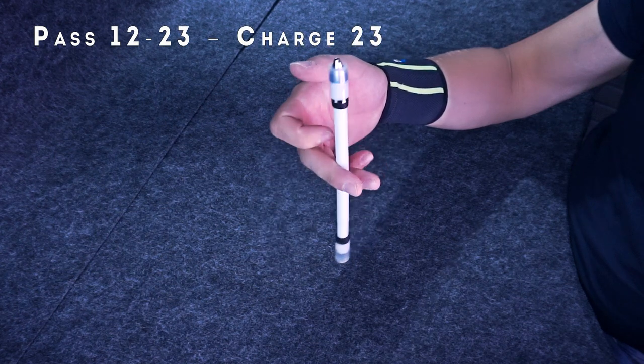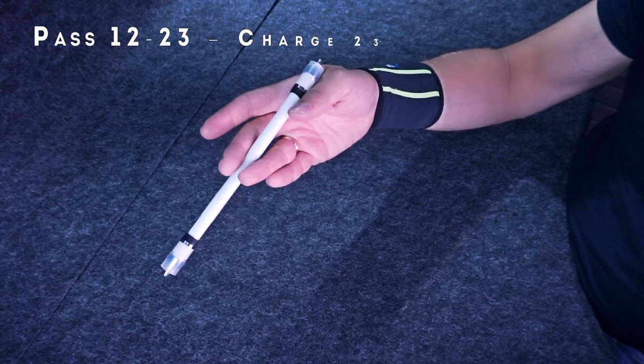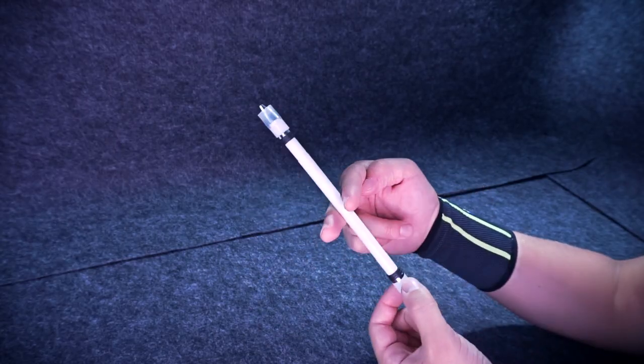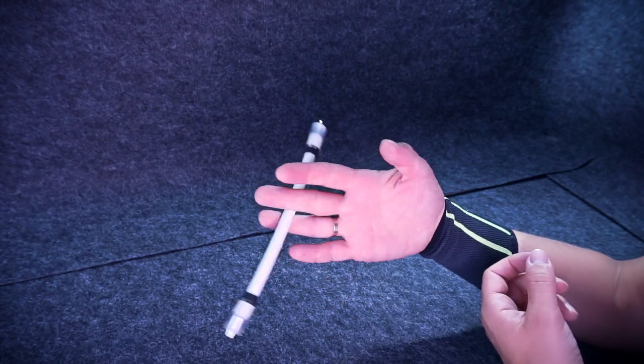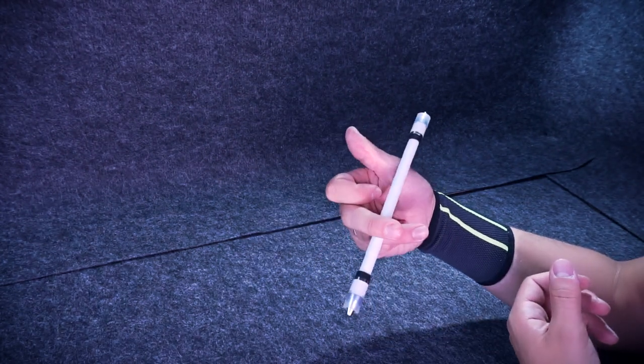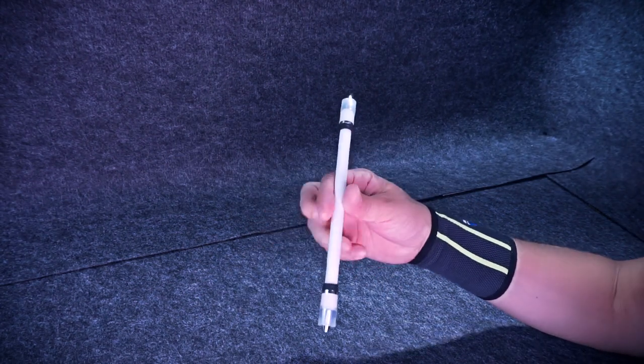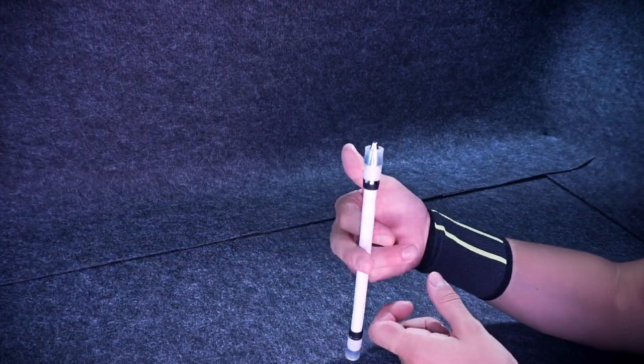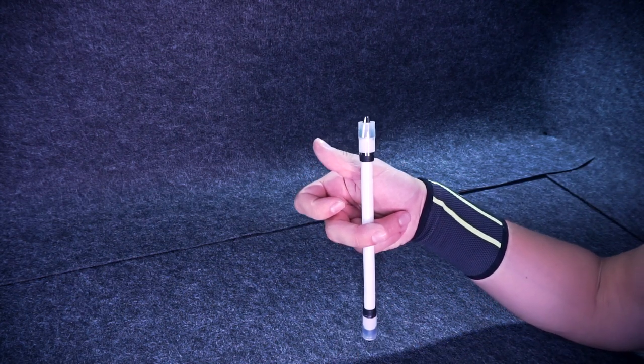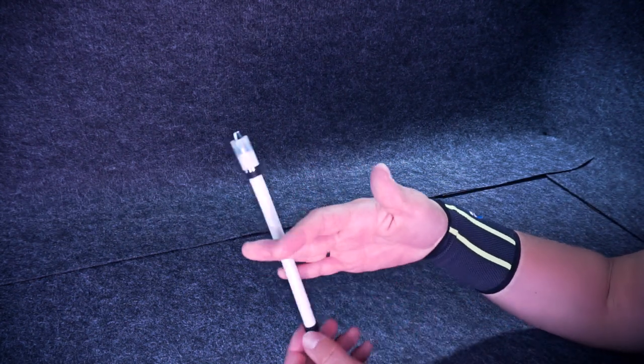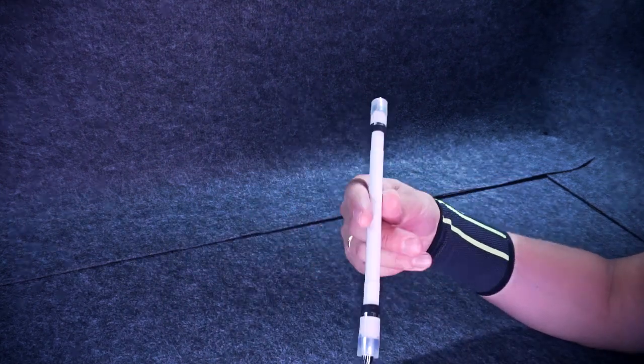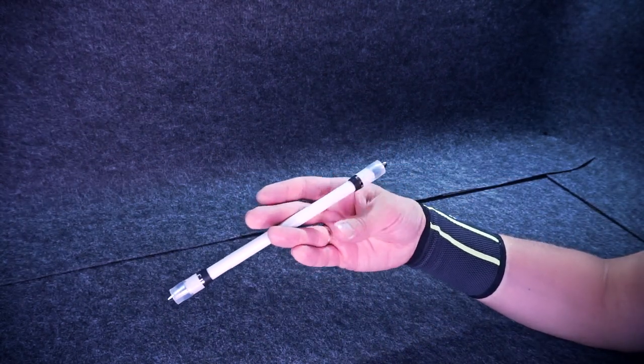Now we need to connect Pass 1223 with Charge. It shouldn't be difficult though. You do Pass 1223 and when you raise ring finger, keep on bumping the pen with it to throw it steep away and do circle motion. When you do Pass 1223, your fingers are bent. When you pass the pen to 23, they are in a good position for doing Charge between middle and ring fingers. So if you have mastered Charge, this link would be a piece of cake to make.